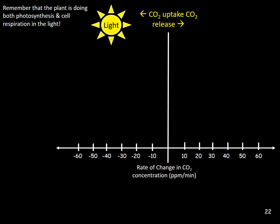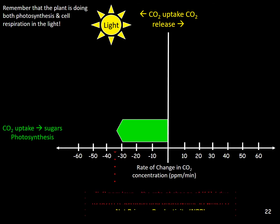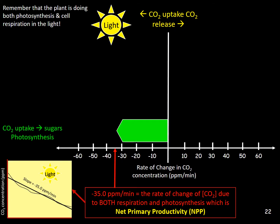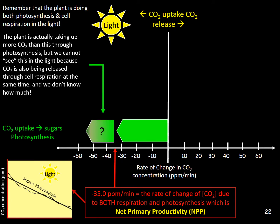Remember that the plant is undergoing both photosynthesis and cellular respiration in the light. The plant is actually taking up more carbon dioxide than we can observe through photosynthesis, but we can't see this directly in the light because carbon dioxide is also being released through cellular respiration at the same time, and we don't know how much. We can determine how much cellular respiration is occurring by putting our leaves in the dark.